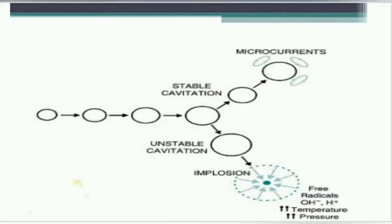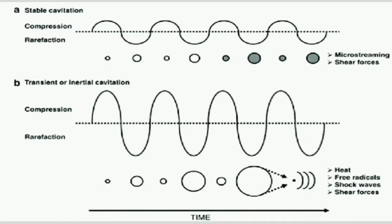Cavitation is a condition in which a bubble of gas is formed inside the tissue as a result of insonation. There are two types: stable cavitation and unstable cavitation. Stable cavitation occurs when the bubbles oscillate to and fro within the ultrasonic pressure field. The stable cavitation remains intact; it is not dangerous and is beneficial due to micro streaming, which is a unidirectional movement of fluid around the boundaries of the cell. Micro streaming influences the permeability of the cell membrane and the direction of movement of molecules in the cell.